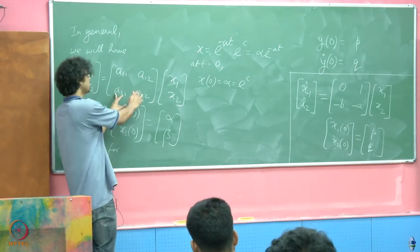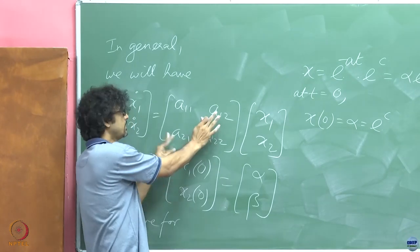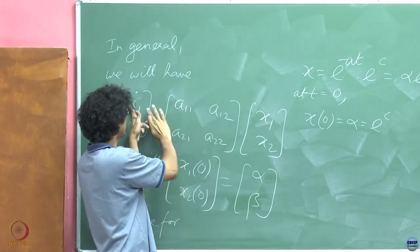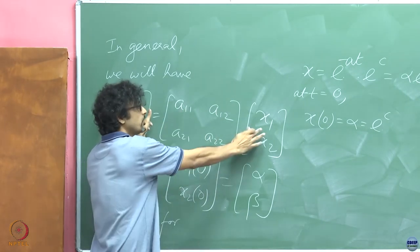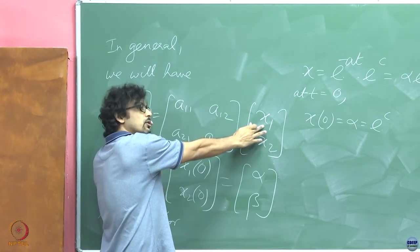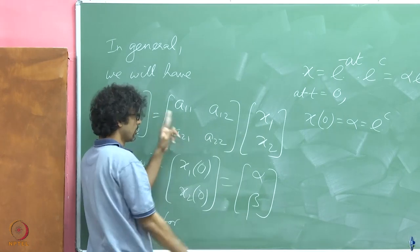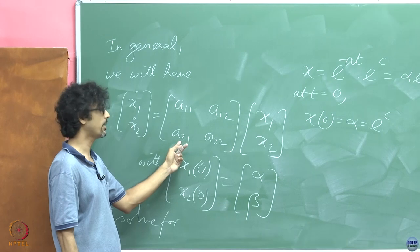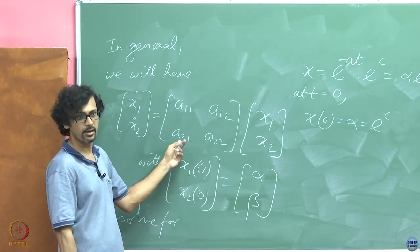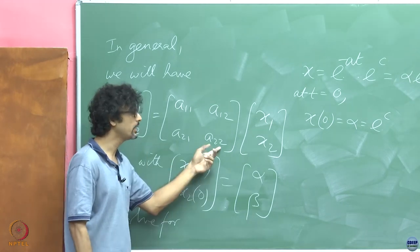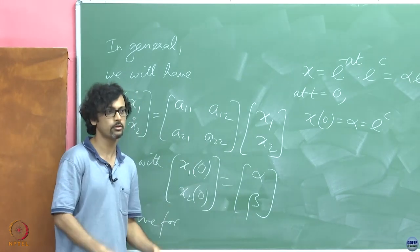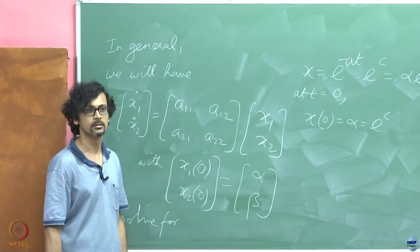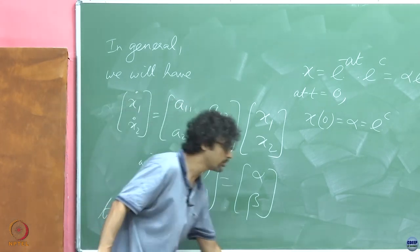The cross-coupling terms a12 and a21 are the problem. The term a12 couples the dynamics of x1 with x2 — if it weren't there, x1 would evolve purely according to its own value. Similarly, if a21 vanished, x2 would be a purely decoupled first order equation. Unfortunately, neither of these is true in the general case.